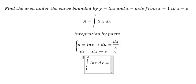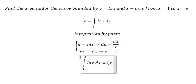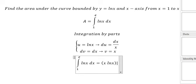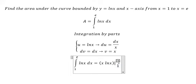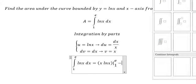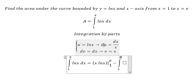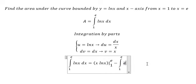Applying integration by parts, we get u times v, which is x·ln(x), evaluated from 1 to e. Then we subtract the integral from 1 to e of v·du, which is x divided by x, giving us the integral of 1 dx.